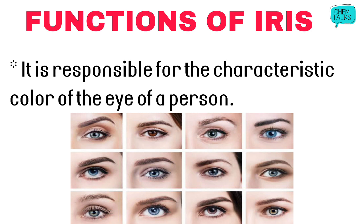In this diagram you can observe: the color of the eye — whether it is brown, black, or blue — is the color of the iris. But in the center of every eye, there is a dark black circular part which is black in every eye. That is the pupil. So the first function is clear: iris is responsible for the characteristic color of the eye of a person.